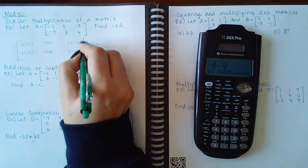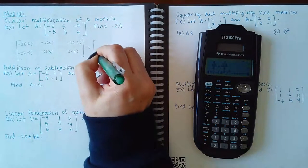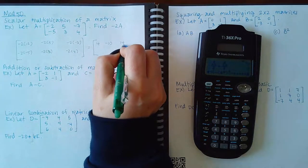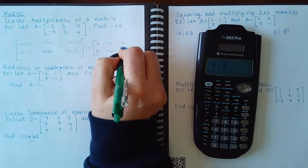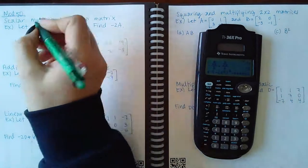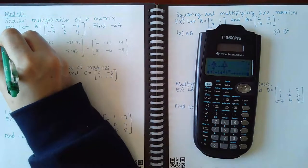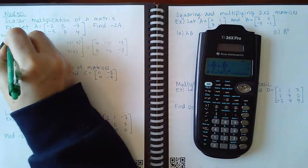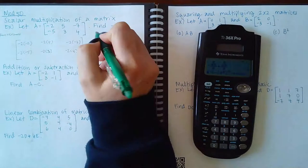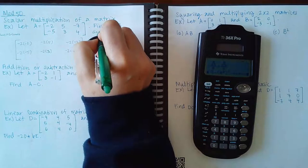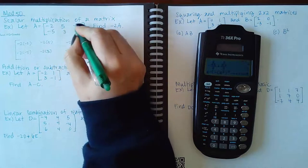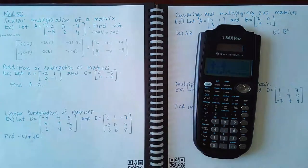The result gives us: positive four, negative ten, fourteen, ten, negative six, and negative eight. Notice that A has dimensions determined by rows by columns. The dimensions here of A are two rows and three columns, so it's a two by three matrix.